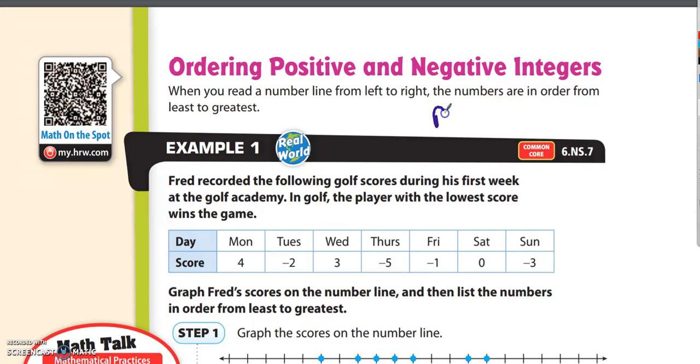Okay, we are on page 14. This is Lesson 1.2, and this page is about ordering positive and negative integers. When you read a number line from left to right, the numbers are in order from least to greatest.